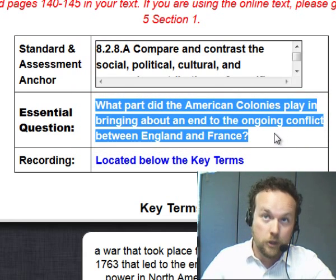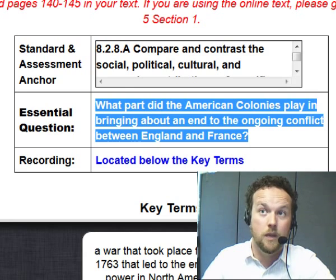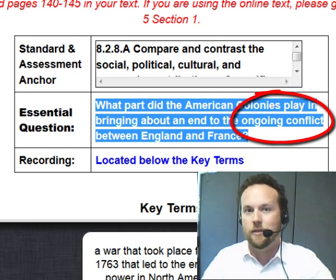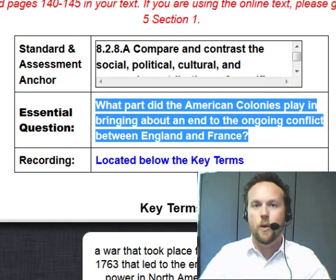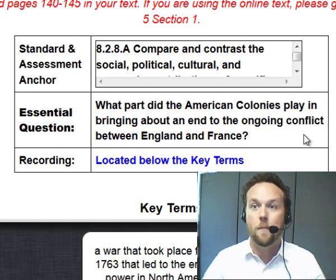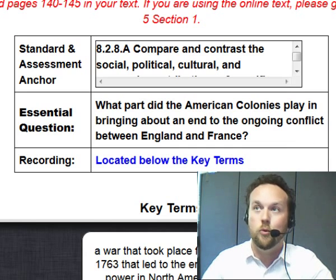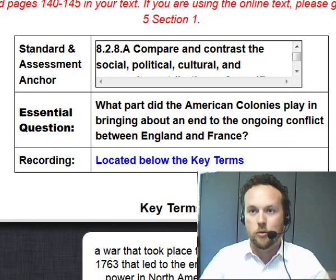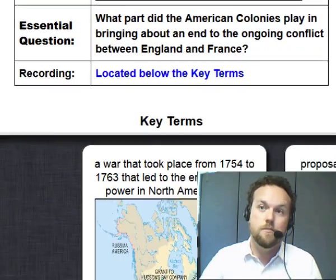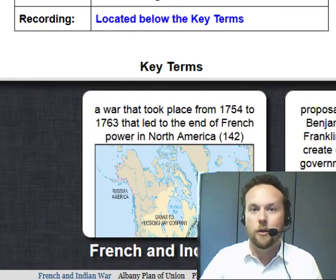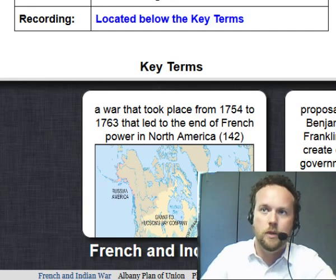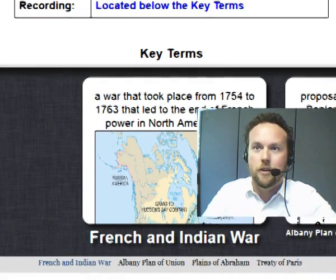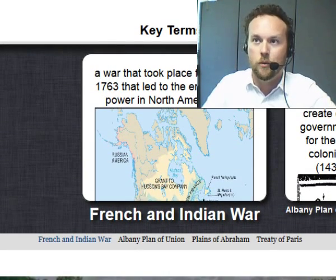Looking at that essential question and some of the key words in it — it mentions an ongoing conflict. The fighting between England and France had been going on for years and years, and eventually it got to the colonies. So there was a part that the colonies played in it. Our key terms include, obviously, the French and Indian War.